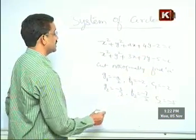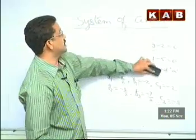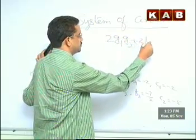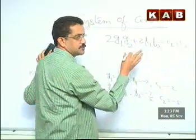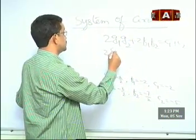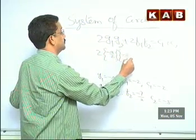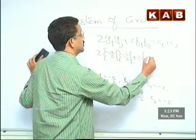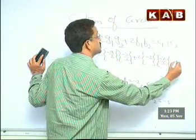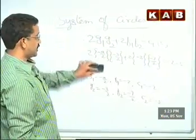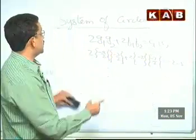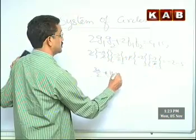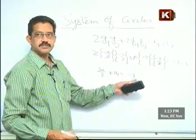Applying the orthogonality condition 2G1G2 + 2F1F2 = C1 + C2: substituting gives 2(-A/2)(-3/2) + 2(-2)(-7/2) = (-2) + (-5). Simplifying: 3A/2 + 14 = -7. So 3A/2 = -21, giving 3A + 28 = -14.